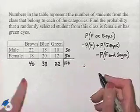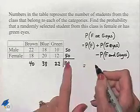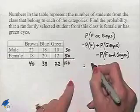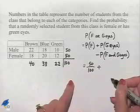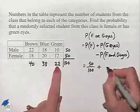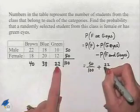The probability of selecting a female is going to be 50 out of 100 plus the probability of selecting someone with green eyes is going to be 22 out of 100.